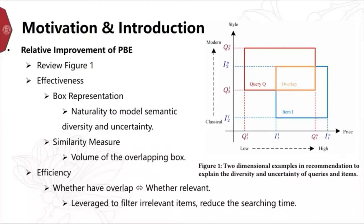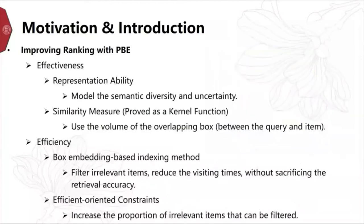For efficiency, as shown in Figure 1, we can easily judge whether a query box and an item box have overlap in space. If two boxes are disjoint with each other, it means that they are not relevant. We can use this property to efficiently filter irrelevant items. So we propose to use box embeddings to improve the ranking task.